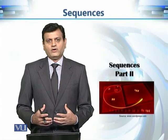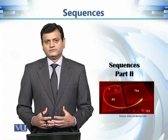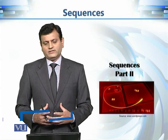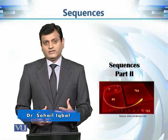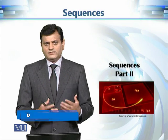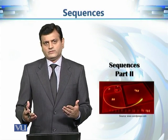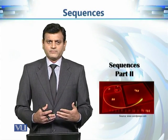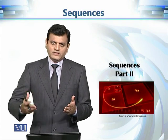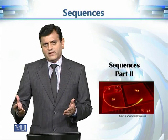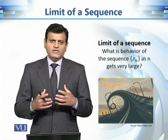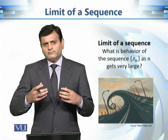This is the second part of our discussion on sequences of complex numbers. So far we have defined what a sequence of complex numbers is. Precisely speaking, a sequence of complex numbers is a function from the set of natural numbers to complex numbers. When we take n equal to 1, the output is the first term, n equal to 2 gives the second term, and so on — giving us an infinite arrangement of complex numbers.